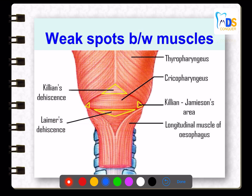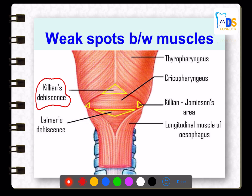This slide shows the weak spots between the muscles of the pharynx. The main one is Killian's dehiscence — the weakest area of the pharynx — located between the oblique thyropharyngeus and the longitudinal cricopharyngeus. Another weak spot is Laimer's dehiscence, located between the cricopharyngeus and the longitudinal muscle of the esophagus.